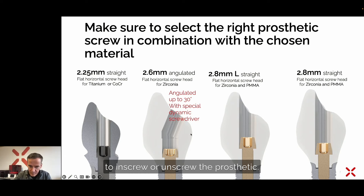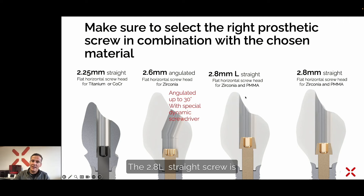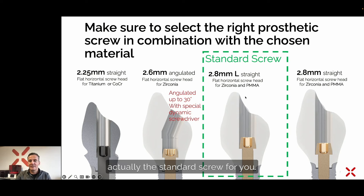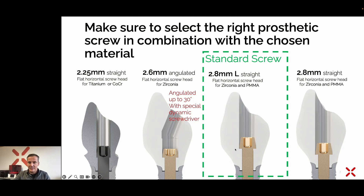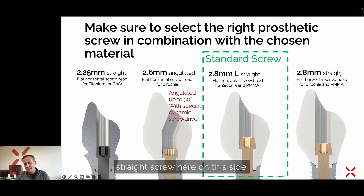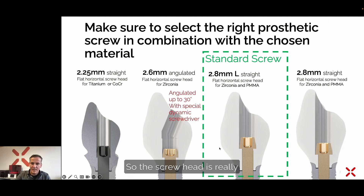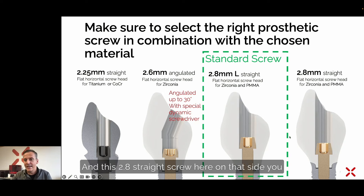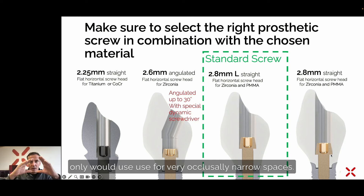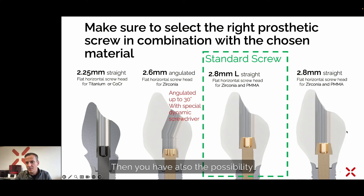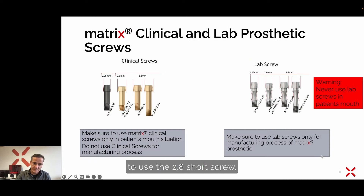If you have an angulated screw channel, make sure you have the special dynamic screwdriver in your office to insert or remove the prosthetic. The 2.0 straight screw is the standard screw — it is the same as the 2.8 straight screw shown here, but as you can see in the picture it is a longer screw so the screw head sits in the middle of the prosthetic. The 2.8 straight screw on that side you would only use for very occlusally narrow spaces. There is also the 2.8 short screw available for that purpose.